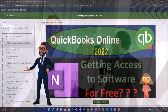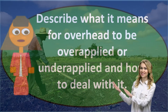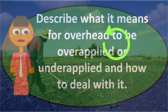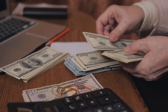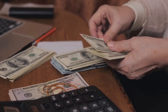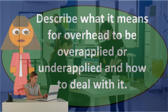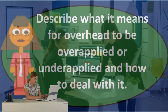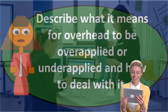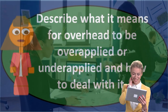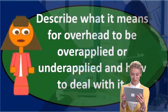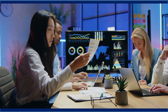We know overhead should go into inventory, but we can't apply it to inventory because we don't know which specific job it belongs to. So we put it into overhead and figure it out later, using some kind of estimate to apply it to the actual jobs. When we allocate overhead out, we don't allocate actual overhead — we allocate an estimate. The main reason is we don't know what the total costs will be at the end of the time period.